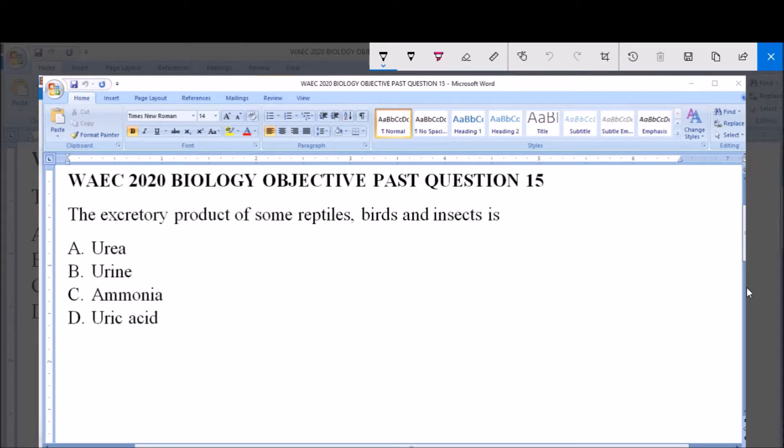The excretory product of some reptiles, birds and insects is A. Urea, B. Urine, C. Ammonia, D. Uric acid.